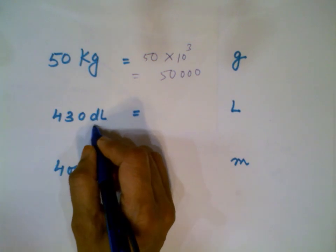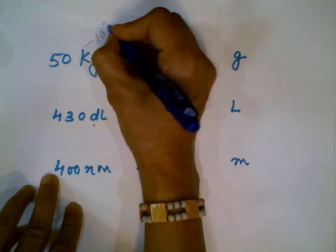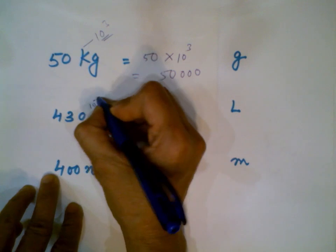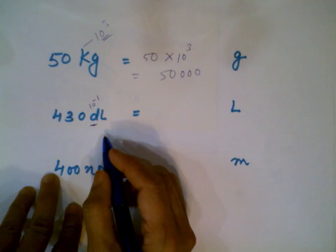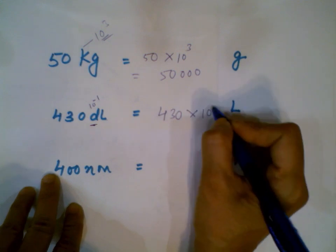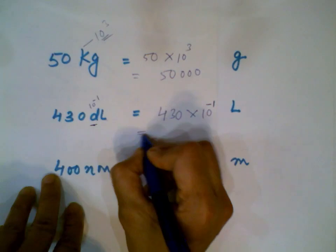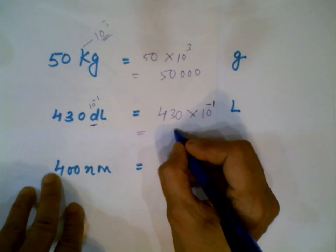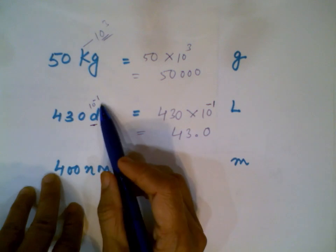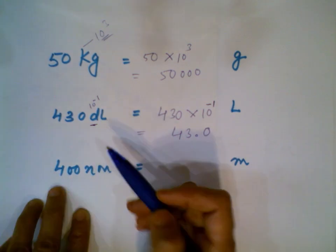For 430 deciliters: deci stands for one-tenth of a unit, so 1 over 10. Write it as 430 times 1/10. Since there's a 10 in the denominator — a negative exponent — you divide, moving the decimal to the left, giving you 43.0 liters.